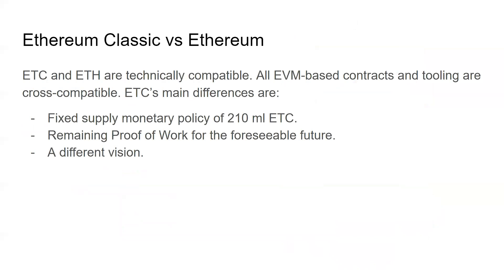Ethereum Classic versus Ethereum — ETC and ETH are technically compatible. They're both EVM-based chains that originate from the same history. Ethereum Classic has for the most part included all the other hard fork upgrades as Ethereum, so as far as the latest opcodes, Ethereum Classic is pretty much up to date. They share the same EVM, so all the tooling you use on Ethereum is cross-compatible — you can deploy a dApp on Ethereum Classic using the same tools like Truffle or Remix.